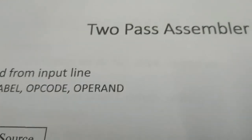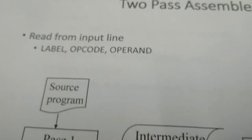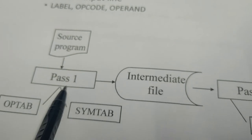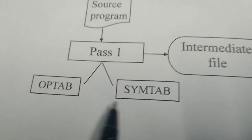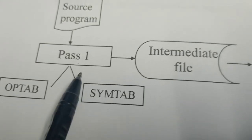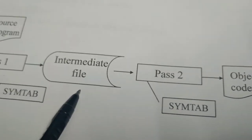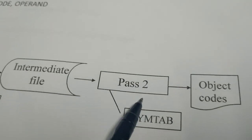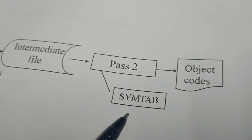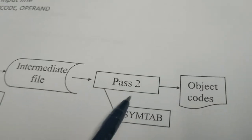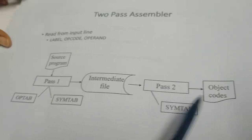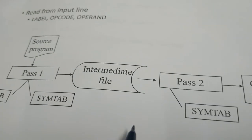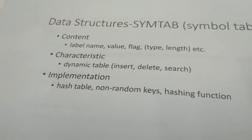The structure of the two-pass assembler: the source program is given as input to Pass 1. Pass 1 interacts with two data structures — the op table and the symbol table. After Pass 1, an intermediate file is generated and passed as input to Pass 2. Pass 2 continues to interact with the symbol table and finally generates the equivalent object code for every instruction.